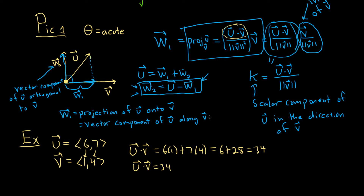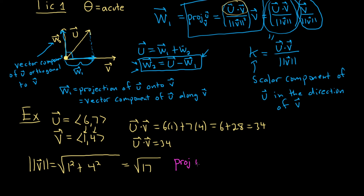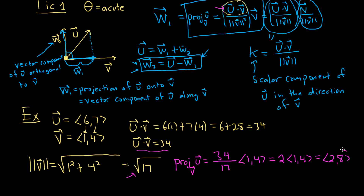That takes care of the numerator. We also need the magnitude of v, which is the square root of 1 squared plus 4 squared, giving the square root of 17. So the projection of u onto v equals 34 over 17 (since the magnitude squared is just 17), times the vector (1, 4). Since 34 over 17 is 2, this is 2 times (1, 4), which equals (2, 8). So (2, 8) is the projection of u onto v.